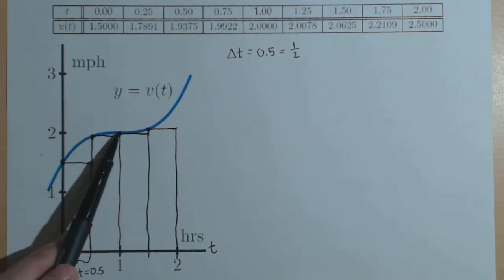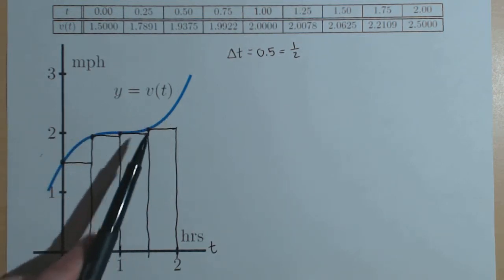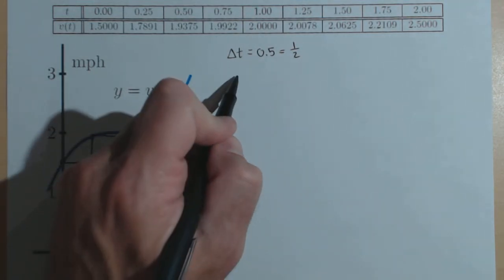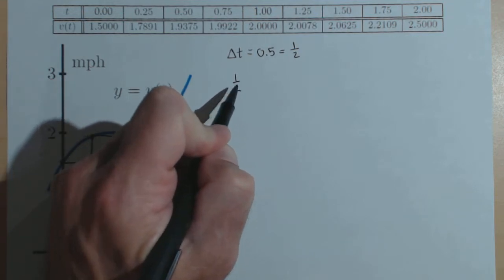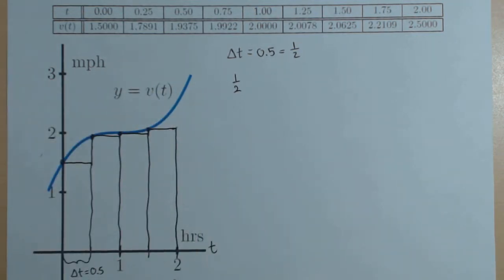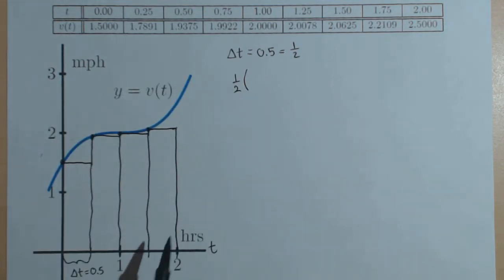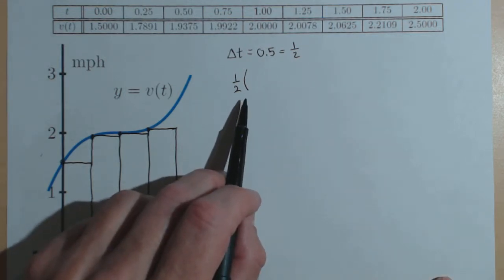I could have just as easily used the right hand and drawn the top of my rectangles that way. I've got a delta t of one half, the width of all four rectangles. Instead of just multiplying each by one half, I'm going to use parentheses so the one half will get distributed.